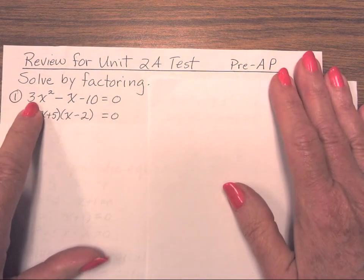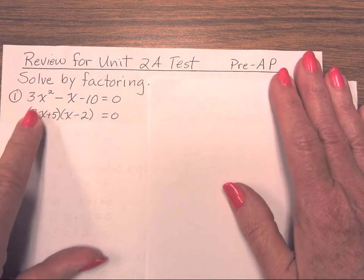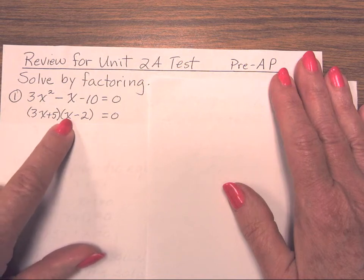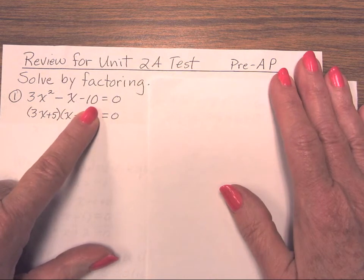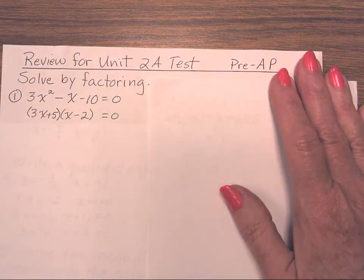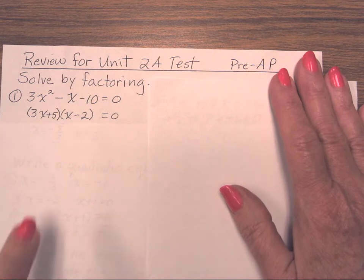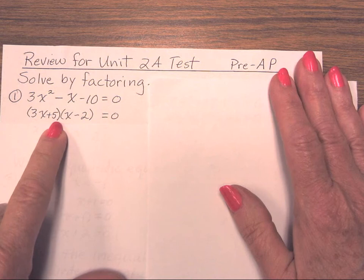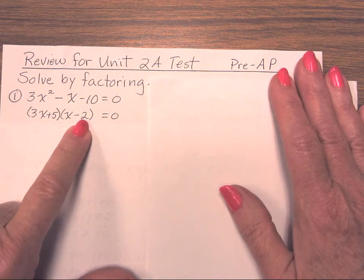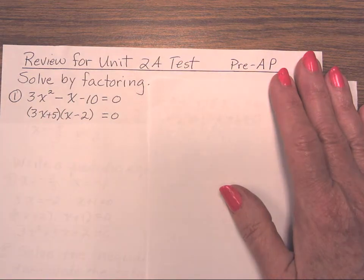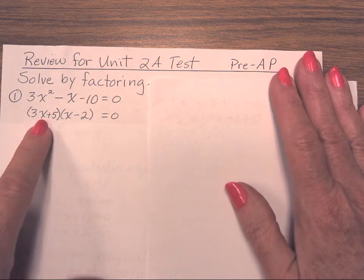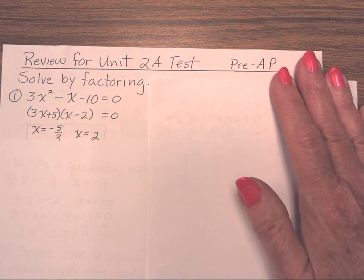My first term was prime — the only way I can get a 3x squared is with 3x times an x. The last term was negative, so I knew the signs had to be different. Searching for two numbers that multiply to give me a negative 10, but inner and outer would combine to give me a negative 1 — this is what I came up with through trial and error. My outer terms are negative 6x, the inner term is 5x, and together that gives me a negative 1x. If I multiply and get 0, then either 3x plus 5 had to equal 0, and when I solve, I get negative 5 thirds.